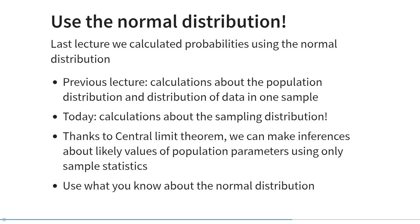Now let's look at some of the things that we can do with the standard error. One thing you can do is to use the normal distribution and perform probability calculus, as we did last week. Last week, we used probability calculus to estimate, for example, how likely it is to observe basketball players taller than 212 centimeters. This week, we're going to use probability calculus to estimate how likely it is to observe a mean greater than a particular value.